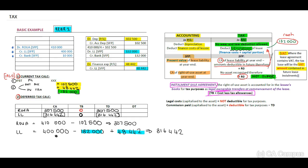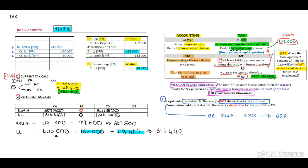Two other important elements to remember: when we look at legal costs — if the legal costs are capitalized to the asset, we debit the right of use asset with the legal costs, and that amount will be included in the depreciation of the right of use asset. If it is capitalized, it will not be deductible for tax purposes. And if there is any commission paid and this is capitalized to the asset, this will be deducted for tax purposes — you need to keep in mind that there will be a temporary difference.